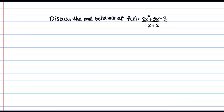In a minute, I'll tell you what a slant asymptote is and how to find it. But first, let's start by looking at what the limits are as this function goes to positive and negative infinity. That will be our starting point for thinking about the end behavior of this function. So let's try to remember how to find the limits at infinity of a rational function, starting with the limit at positive infinity: the limit as x goes to infinity of 2x squared plus 5x minus 3, all over x plus 2.